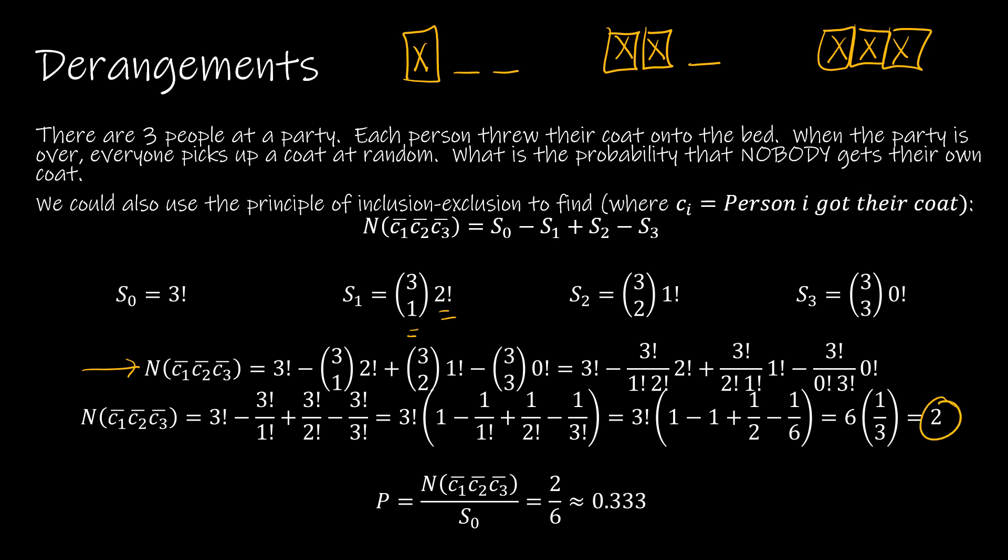So if you have three factorial and three choose one, two factorial and so on, notice I can replace three choose one with the equivalence of three choose one and three choose two and three choose three. And then we can see that the two factorials cancel and the one factorials cancel and the zero factorials cancel. So we end up getting a pattern where we have three factorial and then my denominator is increasing by one, or we can just factor out that three factorial.